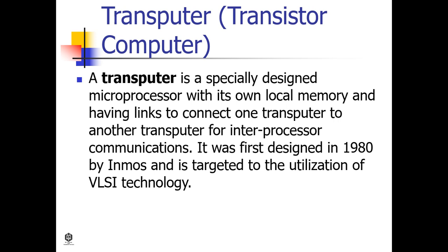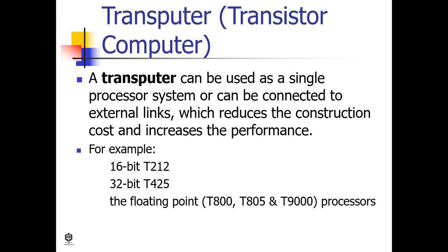The transputer, or transistor computer, is a specially designed microprocessor with its own local memory and links to connect one transputer to another for inter-processor communications. It was first designed in 1980 by INMOS and targets the utilization of VLSI technology. A transputer can be used as a single processor system or connected via external links, reducing construction cost and increasing performance. Examples include the 16-bit T212, 32-bit T425, and floating-point processors such as T800, T805, and T9000.